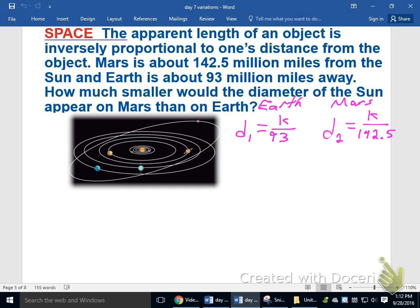All right, let's go ahead and compare how these distances look. So we're wanting to see how much smaller it looks on Mars to Earth. So since Mars is diameter 2 to Earth, which is diameter 1, I'll actually just insert this stuff right here. I haven't found the k, but it's actually not really going to matter at the end. So if I have diameter 2, k over 142.5, divide by diameter 1, k over 93.